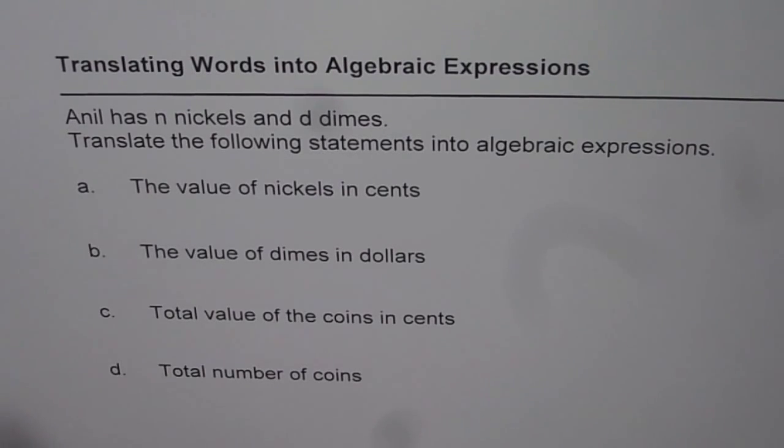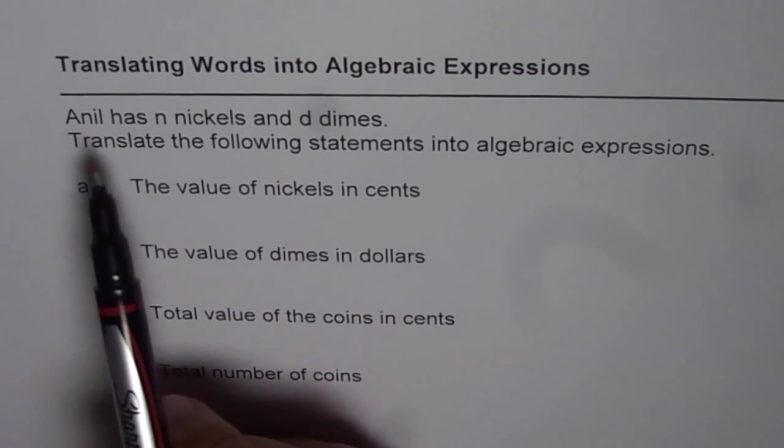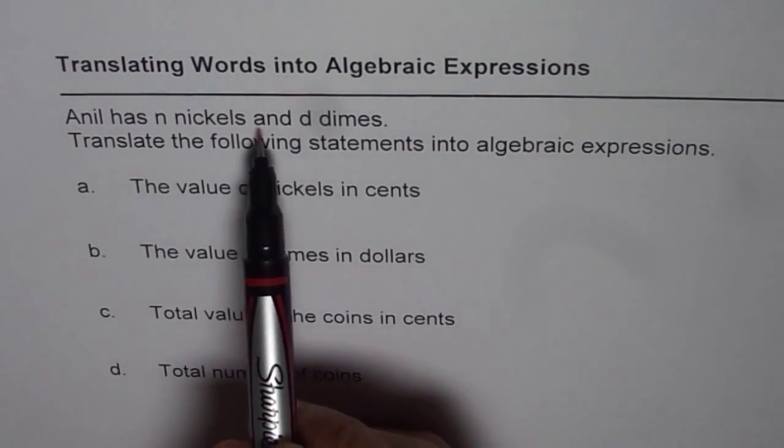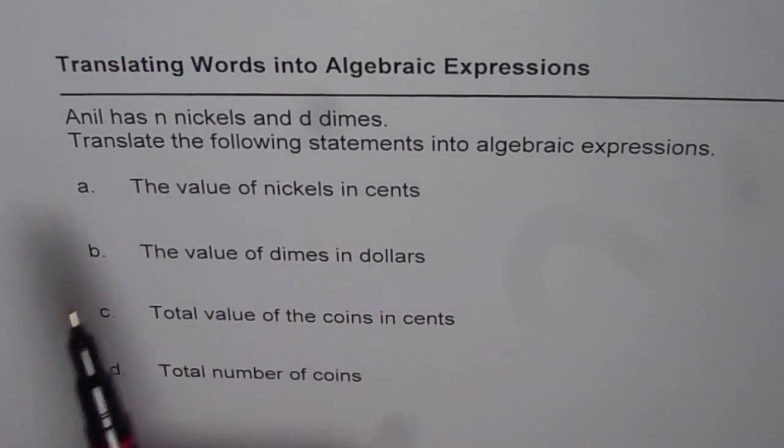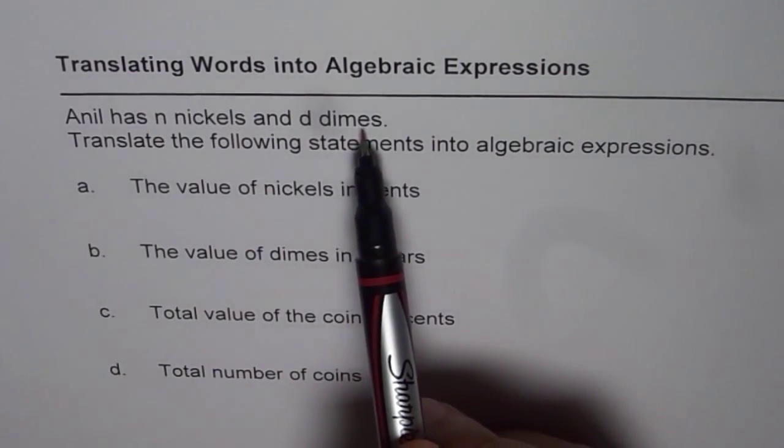First we have our let statement. It says, Anil has n nickels and d dimes. Here we have defined the number of nickels which Anil has is n and number of dimes is d.